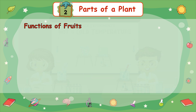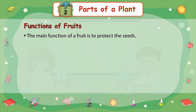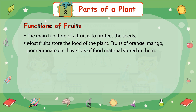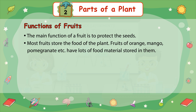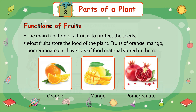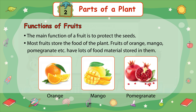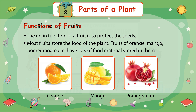Functions of fruits: the main function of a fruit is to protect the seeds. Most fruits store the food of the plant. Fruits of orange, mango, pomegranate, etc. have lots of food materials stored in them.